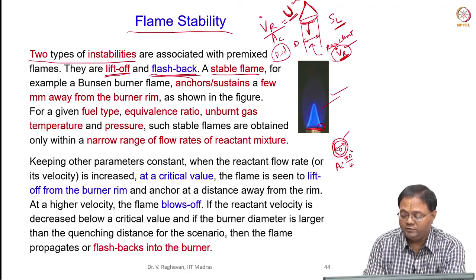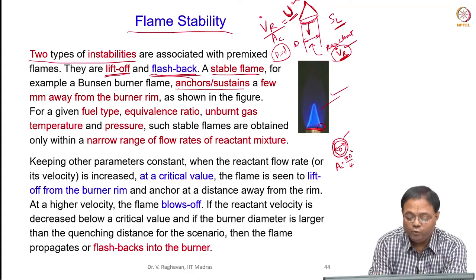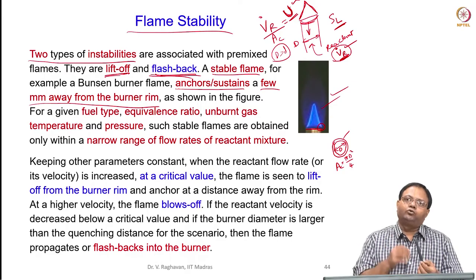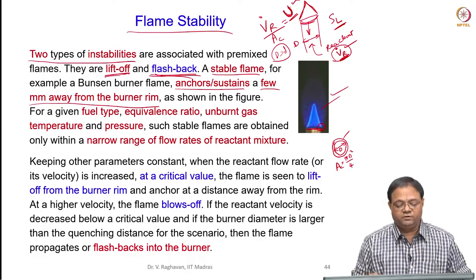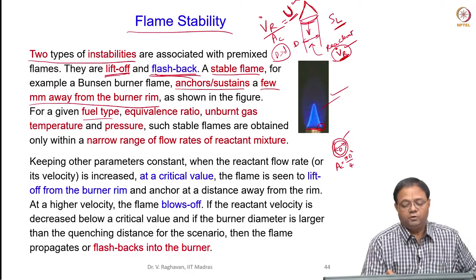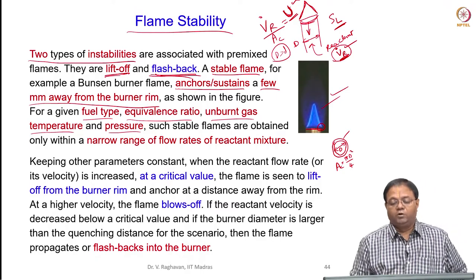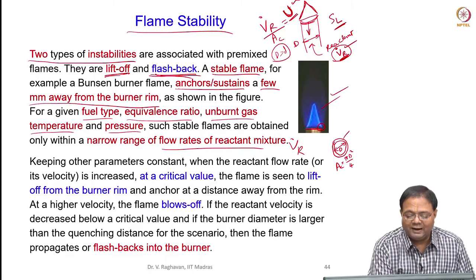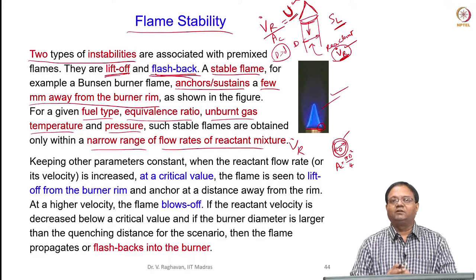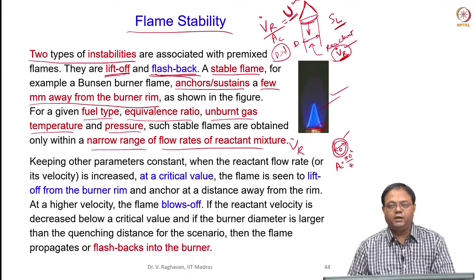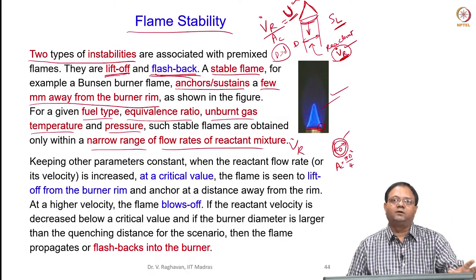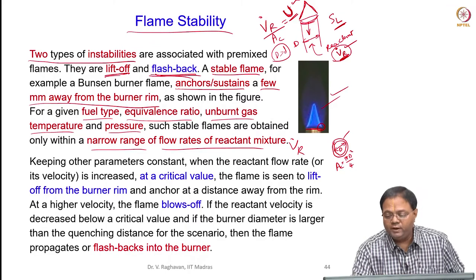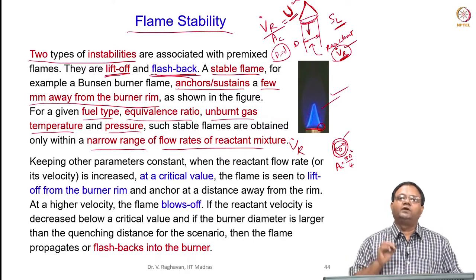A stable flame, as I told, anchors or sustains a few millimeters away from the burner rim, because if it is very close it will lose heat and radicals to the wall. For a given fuel type, equivalence ratio, unburned gas temperature, and pressure, stable flames can be obtained, but the flow rate of reactants V_dot_R is in a narrow range. For a given burner diameter with other parameters fixed, only in a certain range of flow rates can we establish stable flames that will not change shape for a given steady flow of reactants.